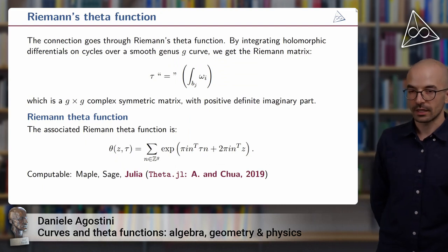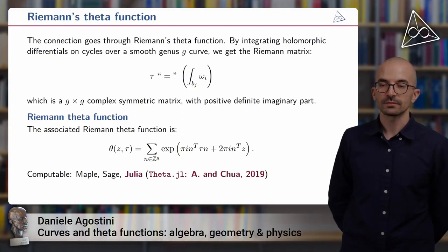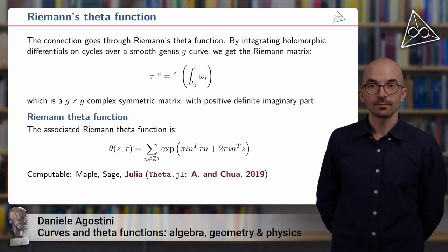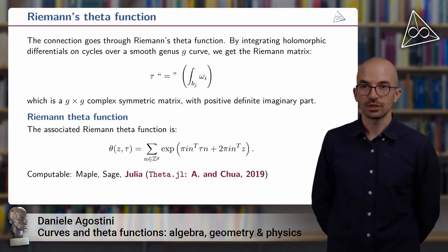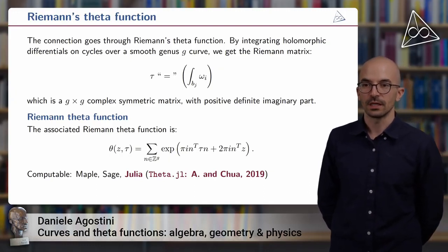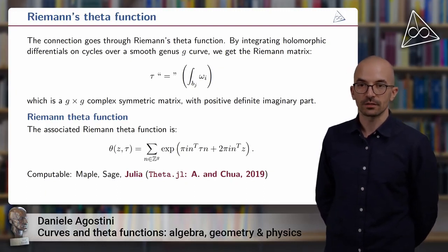So how are curves connected to water waves? Well, the connection comes through Riemann's theta function, and to define it we first recall the notion of a Riemann matrix. So a Riemann matrix is a g times g complex symmetric matrix with positive definite imaginary part, and it's usually denoted by tau. So how do we obtain such a matrix from a curve?